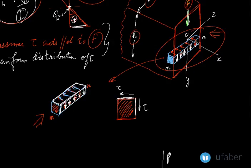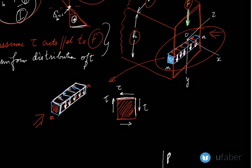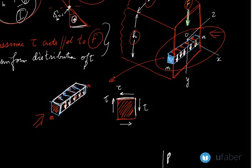To bring about equilibrium, complementary stresses act across the element on the remaining faces as well. All four of these stresses are equal in magnitude, although their directions differ.